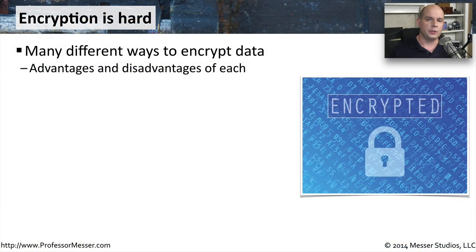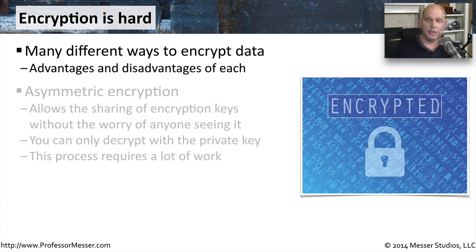We know that if we'd like to protect data that we send across the network, we're going to want to encrypt that information. There are two major ways of encrypting data, and there are advantages and disadvantages of each of those.